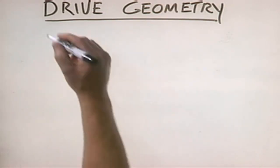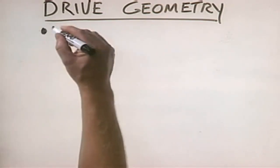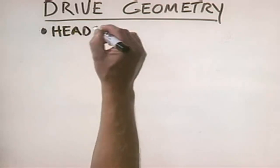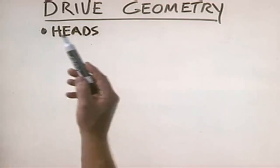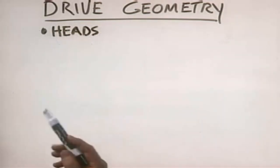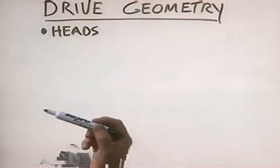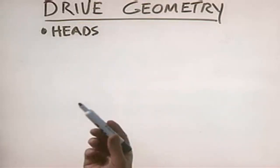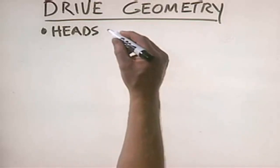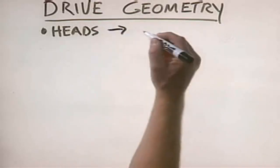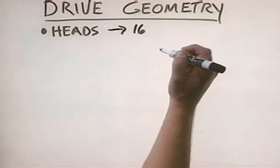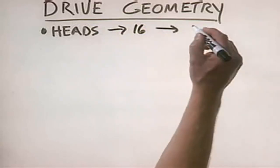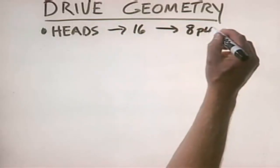The first parameter is the number of heads in the system — simply, how many heads are there? If you know the number of heads, you can figure out how many platters are in the system, since every platter has two heads. For example, if you have a hard disk drive with 16 heads, you have eight platters.